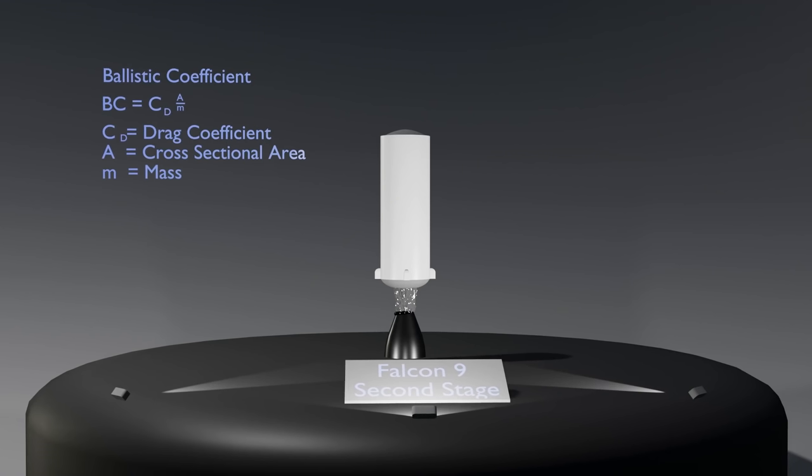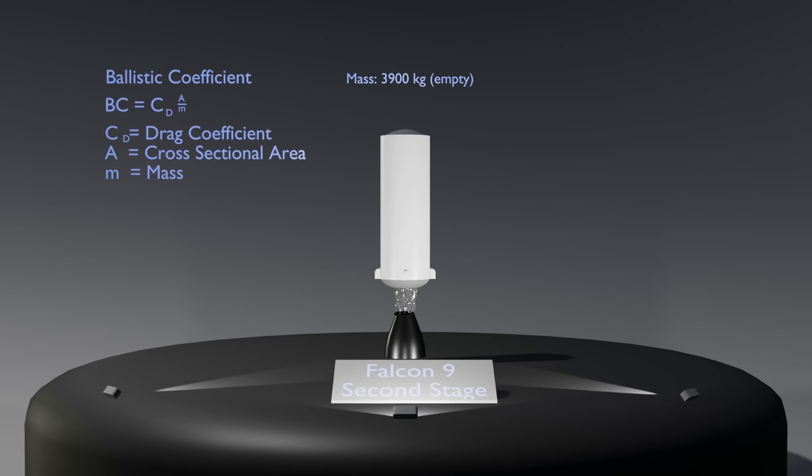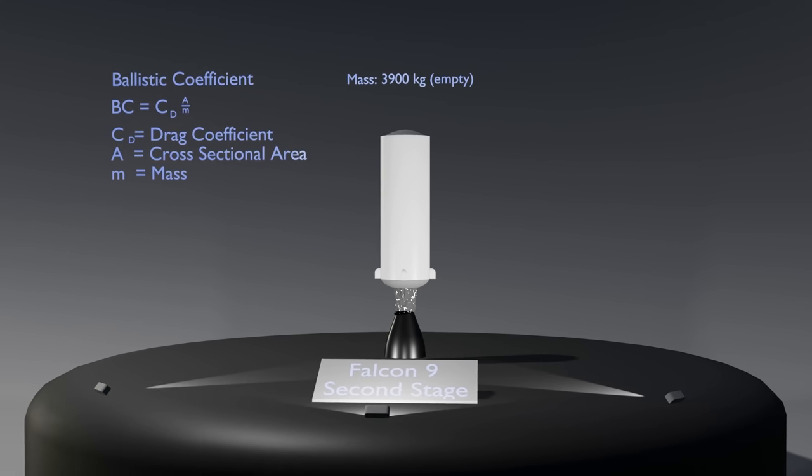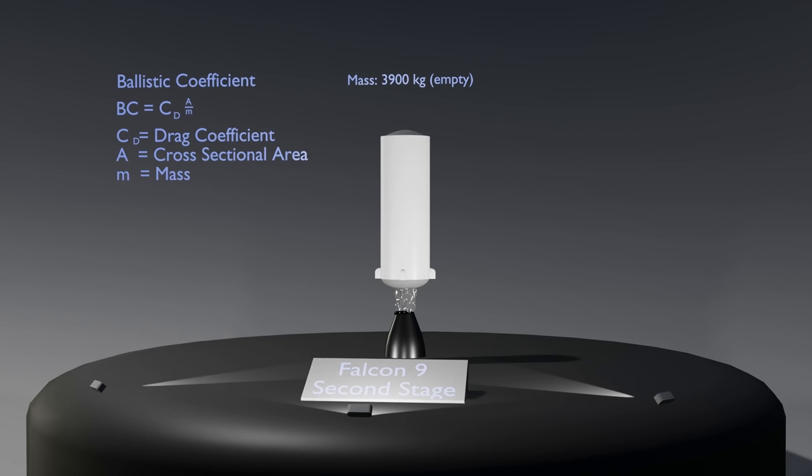The last variable to calculate the ballistic coefficient is the mass of the object, which in this case is just over 3,900 kilograms when taking into account the remaining fuel.